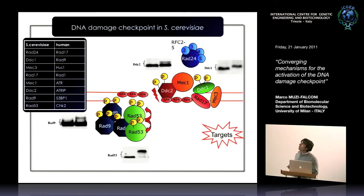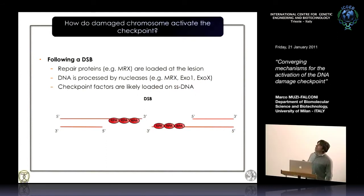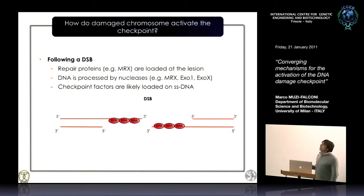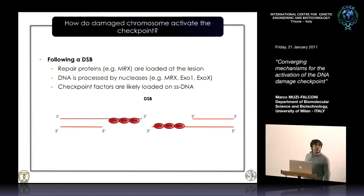After a double-strand break, repair proteins are recruited to the break site. The double-strand break is processed to generate single-stranded DNA filaments, which are quite long. These single-stranded DNA filaments are rapidly covered by the single-stranded DNA binding protein RPA. This is the structure that recruits the apical kinase and the checkpoint factors. So it's not the double-strand break itself, but a product of its processing that is required to load the checkpoint factors.